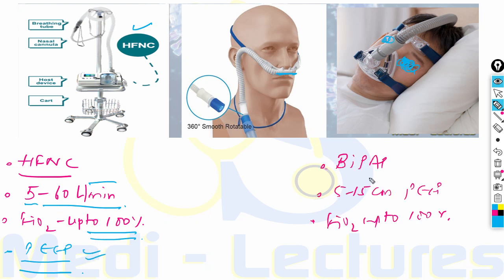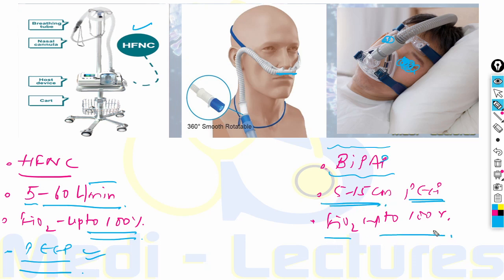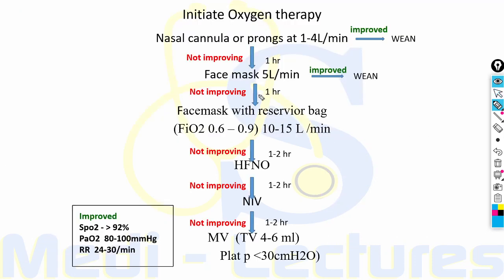The BiPAP mask, connected to a ventilator, is also known as bi-level positive airway pressure ventilation. It can generate a PEEP of 5 to 15 centimeters of water, and FiO2 can be adjusted up to 100%. This is a typical protocol to initiate and provide oxygen therapy.